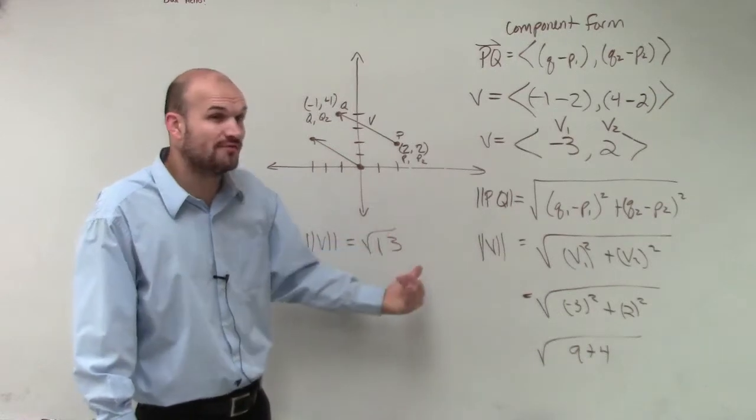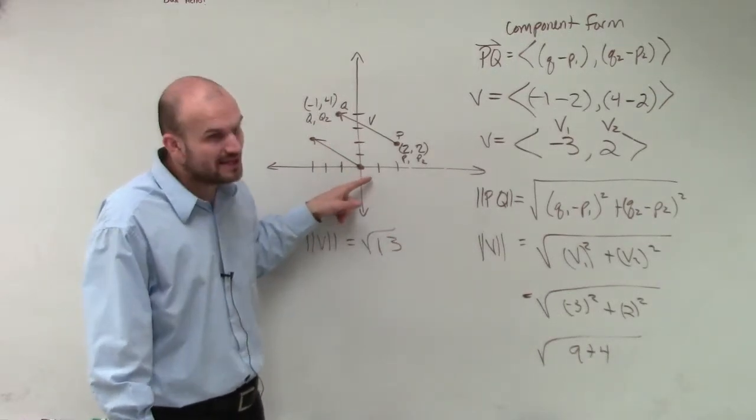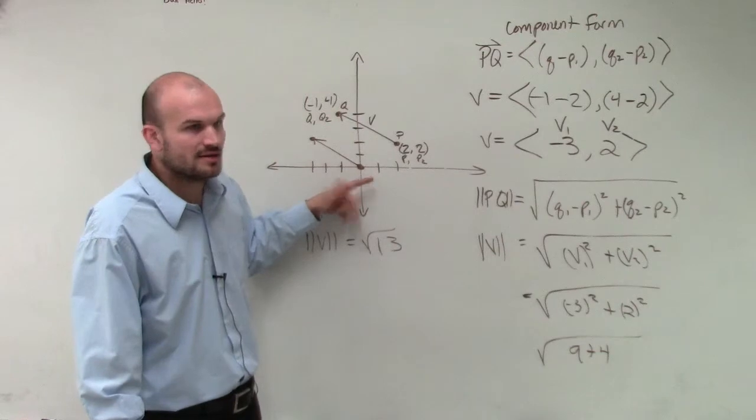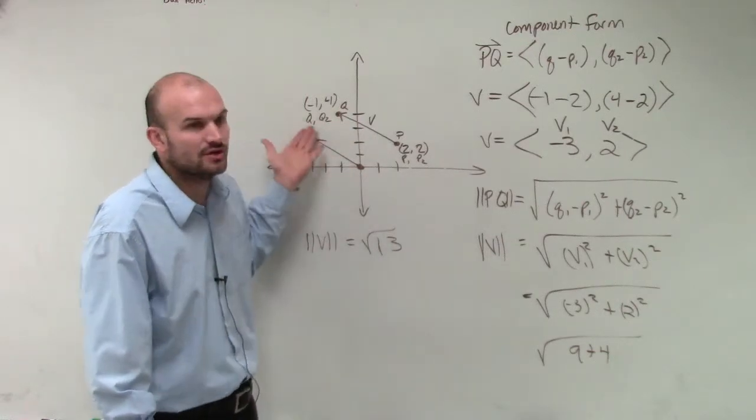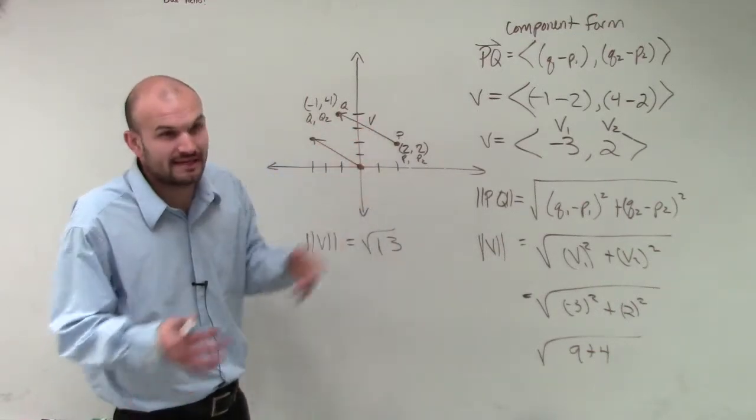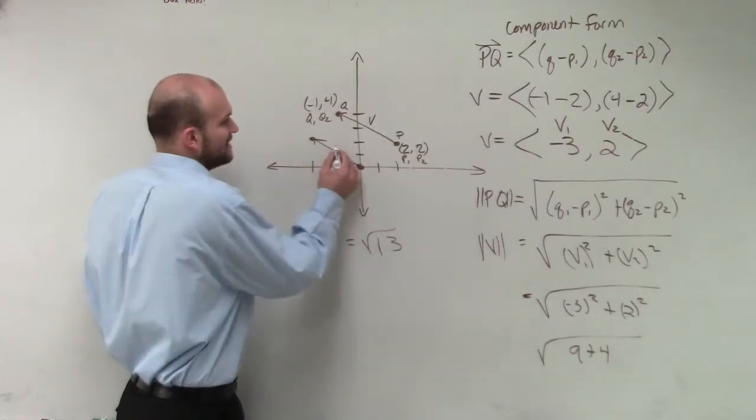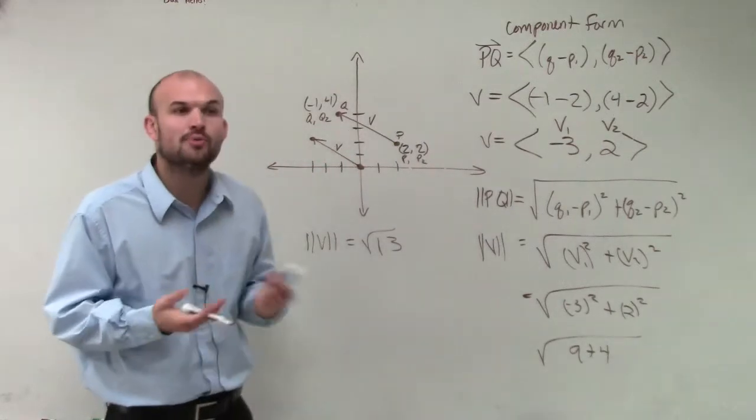But when you put it in component form, we always know what P is. P is always going to be 0, 0, right? So we don't need to keep on saying P to Q. We can just use the name V, right? Which V is going to be your vector in component form.